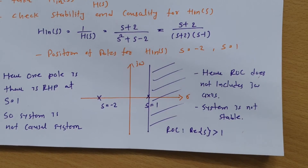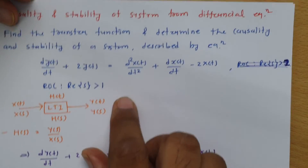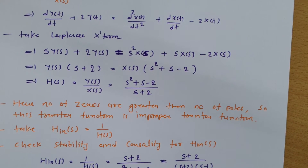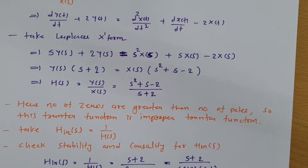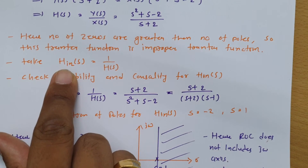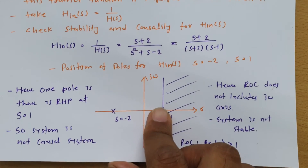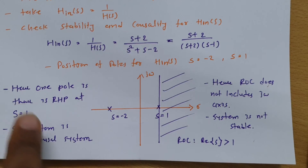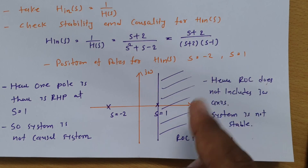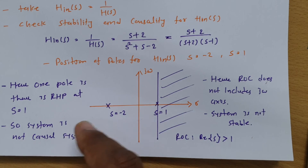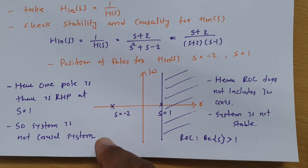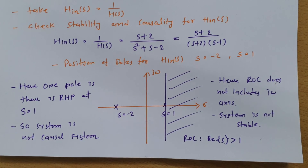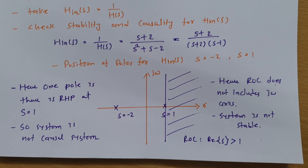To summarize: when solving problems on stability and causality, first find the transfer function, then check if it is proper or improper. If the number of poles is less than the number of zeros, it is improper — take the inverse transfer function. Based on the inverse transfer function, check pole positions for causality (all poles must be in the left half plane) and check whether the ROC includes the jω axis for stability. I hope you understood this — thank you for watching.